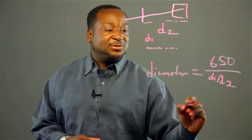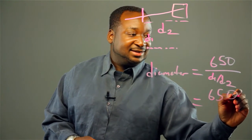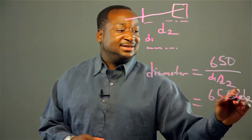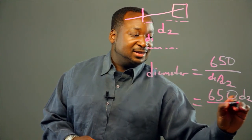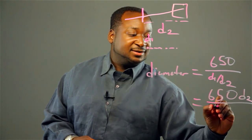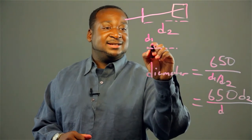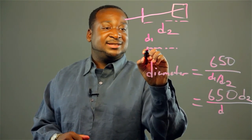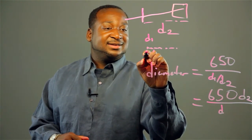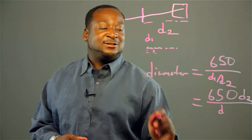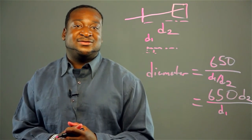So when we multiply that out, that's 650 times D2 — the distance from the hair to the wall — divided by D1, which is the small distance from the center to the first dull point on the spot of the wall. And that's how you calculate the diameter of a human hair.